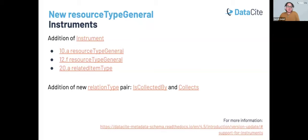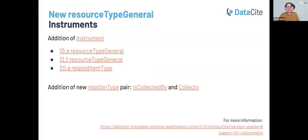To support the capture of instrument data, we have added additional relation types and related identifiers, such as 'is collected by' or 'collects.' This is to build clear connections between the instrument and the related research output. We hope that by collecting this essential information, we'll have a better, more comprehensive understanding of the research process.